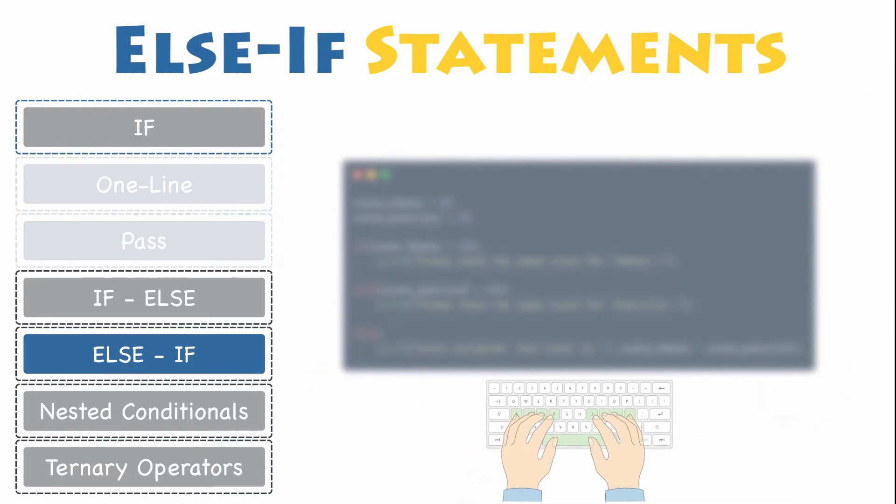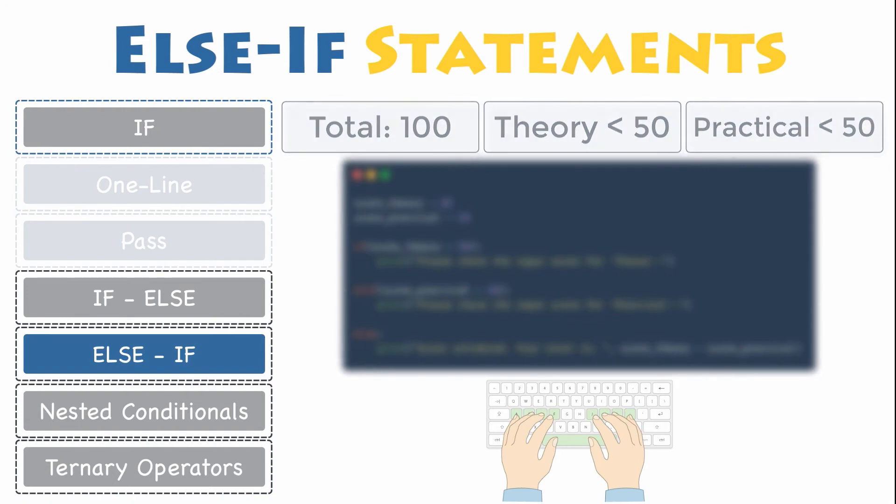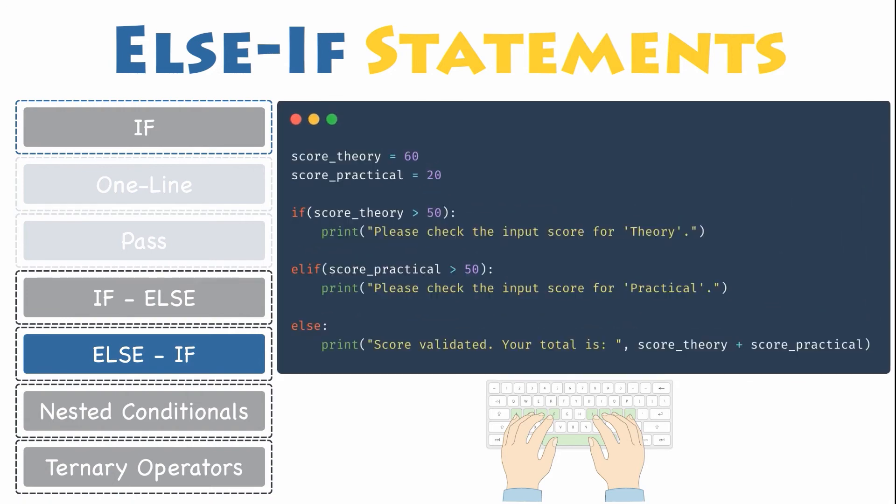How can you represent this in Python code using if elif statement? One way is to check whether the individual scores for score theory and practical do not exceed 50. Here is an example. Let's declare the same two variables, but one of them with a value greater than 50.